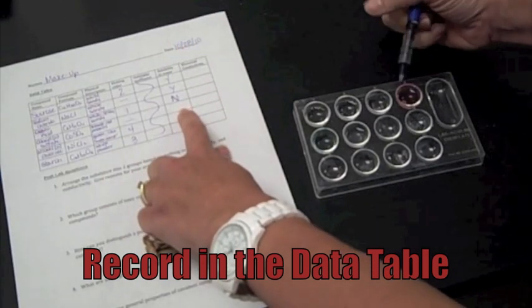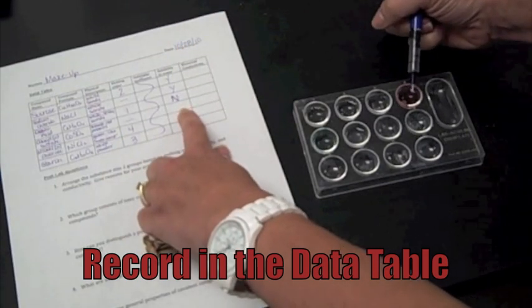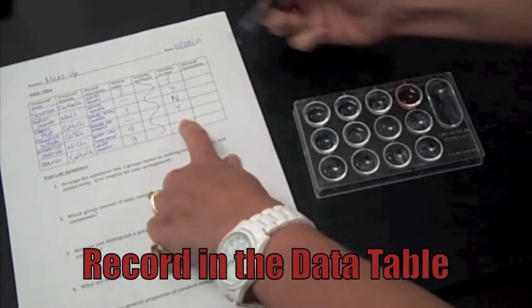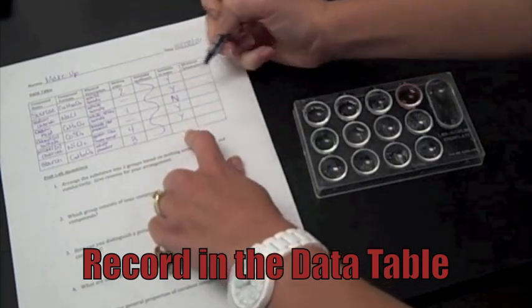The cobalt sulfate, obviously, I now have pink water, so it dissolved. The nickel chloride dissolved as soon as I added water to it, so it's very soluble.